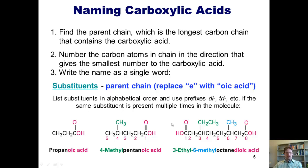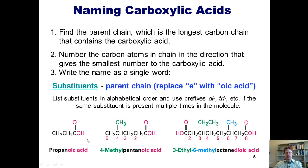Here are some examples. The first example has a chain three carbons long. A three-carbon chain by IUPAC standards is called propane. Because this is a carboxylic acid, we start numbering at carbon 1, then carbon 2, and carbon 3. We take off the letter E at the end of propane and replace it with the suffix -oic acid. Thus, this compound is called propanoic acid.